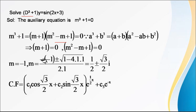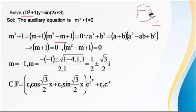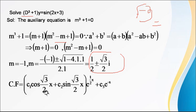The discriminant gives 1 − 4 = −3, so the roots are ±√3 · i, giving m = 1/2 ± (√3/2)i — imaginary roots. The complementary function (CF) is e^(αx)[c₁cos(βx) + c₂sin(βx)] with α = 1/2 and β = √3/2, giving e^(x/2)[c₁cos(√3x/2) + c₂sin(√3x/2)], plus c₃e^(−x) for the real root m = −1.